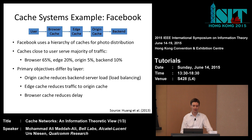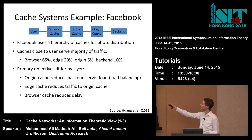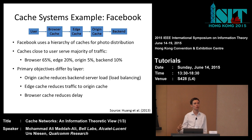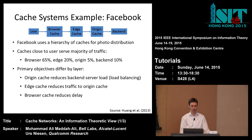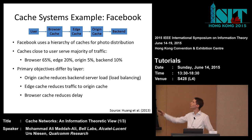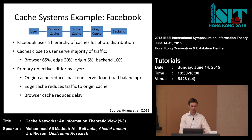The primary objectives differ by layer. The origin cache reduces back-end server load — it shields the back end, acting as load balancing. The edge caches reduce traffic to the origin cache, minimizing bits sent over that link. The browser cache mainly reduces delay by enabling very quick photo loading.